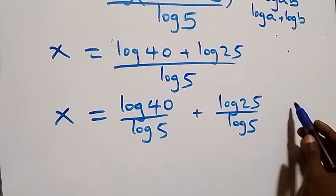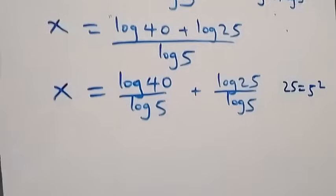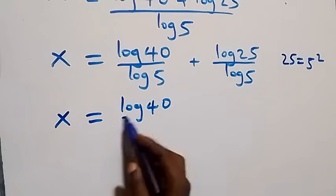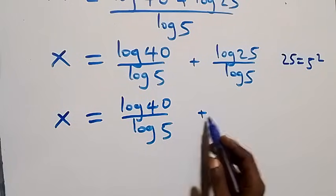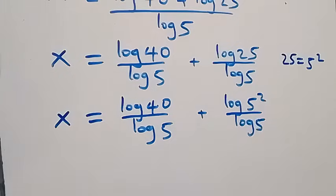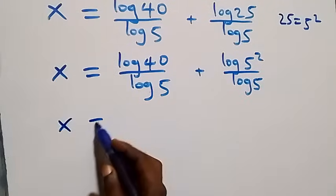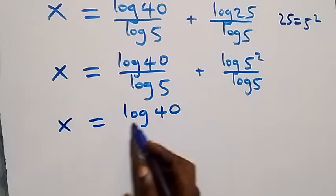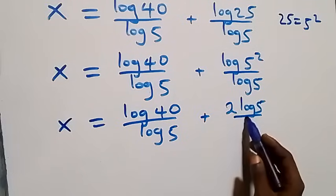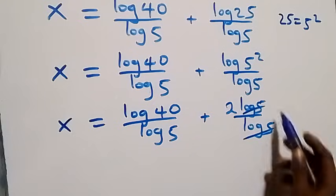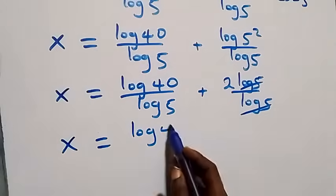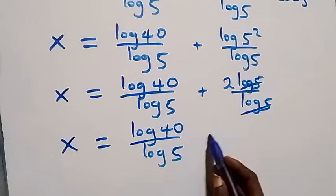We can express 25 as 5 times 5, which is 5 squared. So x equals log 40 over log 5 plus log of 5 squared over log 5. Applying the power rule, the 2 comes down: x equals log 40 over log 5 plus 2 log 5 over log 5. The log 5 terms cancel, leaving 2, so x equals log 40 over log 5 plus 2.